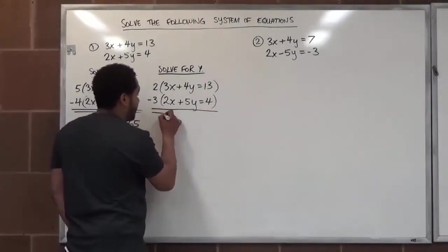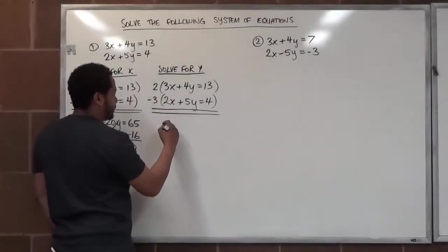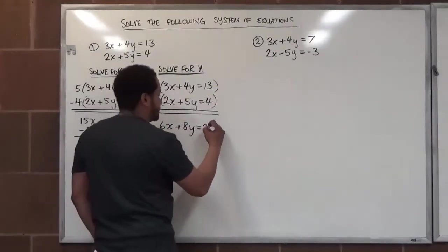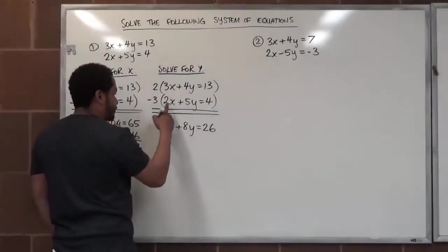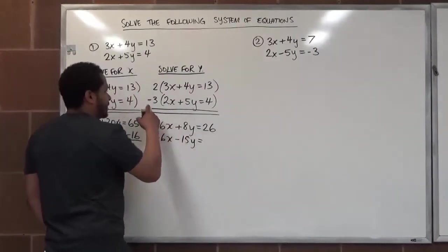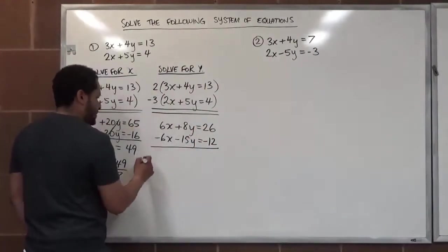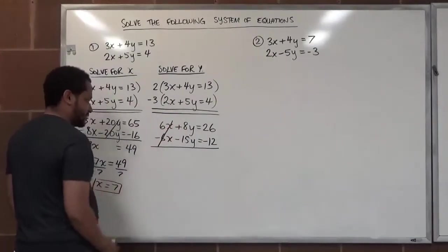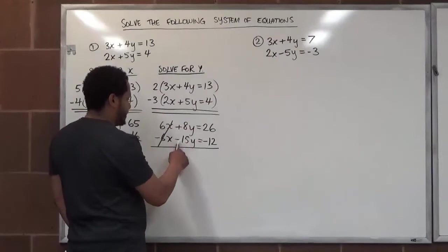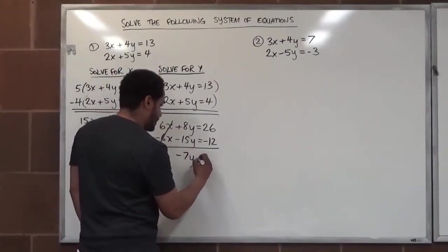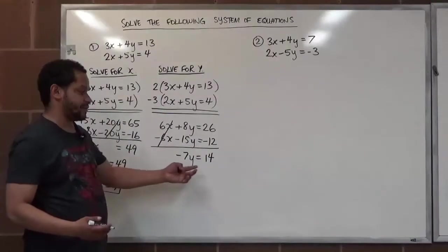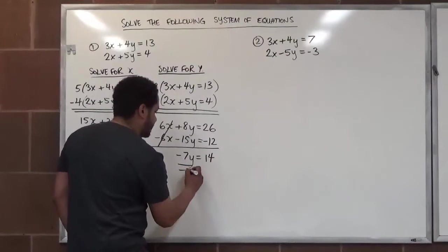Distributing: 2 times 3x is 6x, 2 times 4y is 8y, 2 times 13 is 26. The bottom gives negative 3 times 2x is negative 6x, negative 3 times 5y is negative 15y, and negative 3 times 4 is negative 12. The 6x and negative 6x cancel. Then 8y minus 15y is negative 7y, and 26 minus 12 is 14. Since negative 7 goes into 14 negative 2 times, our y solution is negative 2.